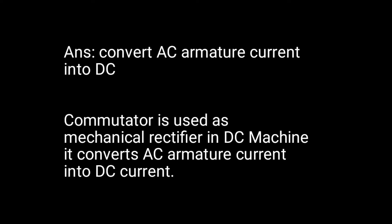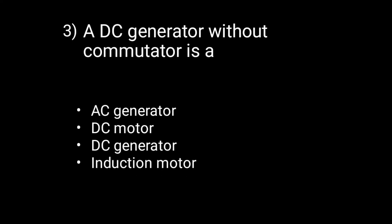Question 3: A DC generator without a commutator is called what? Option A is correct — it is an AC generator. Because without a commutator, the AC generated in the armature is not converted to DC. With a commutator, the AC is converted into DC current, making it a DC generator.